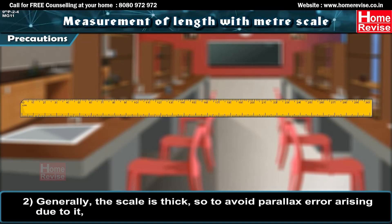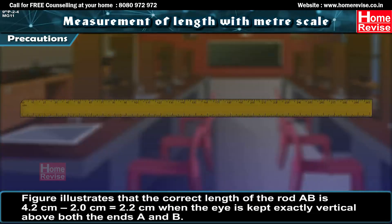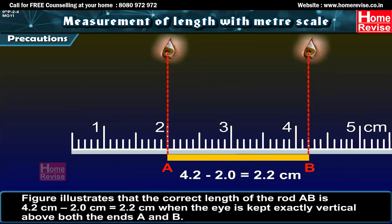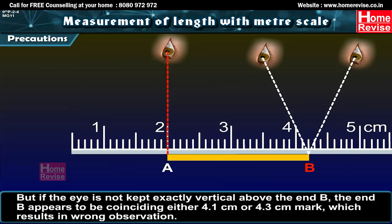Second, since the scale is thick, to avoid parallax error, the eye must be kept vertically above the end of the object and the corresponding graduation read in the line of sight. For example, the correct length of rod AB is 4.2 cm minus 2 cm equals 2.2 cm when the eye is kept exactly vertical above both ends A and B. If the eye is not kept exactly vertical above end B, it appears to coincide with either 4.1 cm or 4.3 cm, giving a wrong observation.